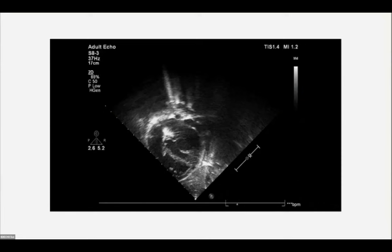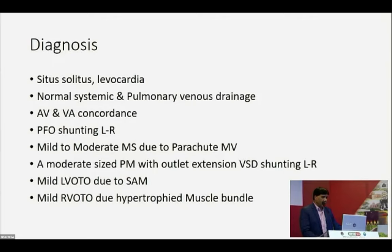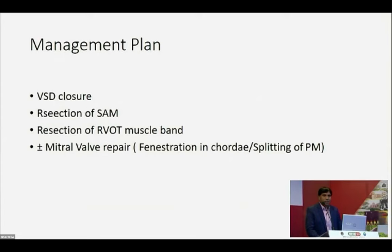Diagnosis: situs solitus, levocardia, normal systemic and pulmonary venous connections, ventriculoarterial concordance, small perimembranous VSD with left-to-right shunt, mild-to-moderate mitral stenosis due to parachute mitral valve, mild LVOTO due to sub-aortic membrane, and mild RVOTO due to hypertrophied muscle bundle. Management plan: VSD closure with resection of the sub-aortic membrane and RVOT muscle bundle; mitral valve repair is not required at this stage but should be followed up. If the patient later develops severe mitral stenosis, fenestration of the cordae or splitting of the papillary muscle may be needed.